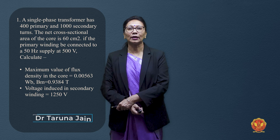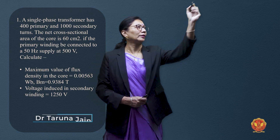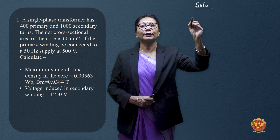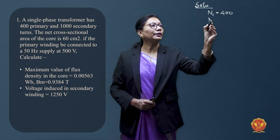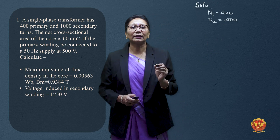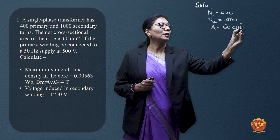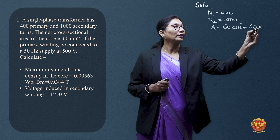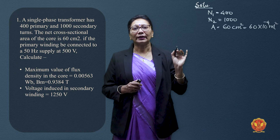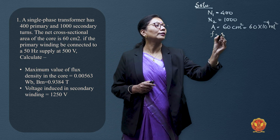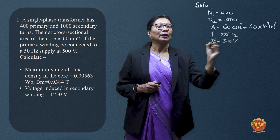Let us solve some numericals based on the EMF equation of the transformer. A single-phase transformer has 400 primary turns, so N1 is 400. Secondary turns are 1000. The net cross-sectional area of the core is 60 cm², which converts to 60 × 10⁻⁴ m² in SI units. The primary winding is connected to a 50 Hz supply, and the primary voltage V1 is 500 volts.